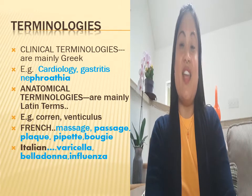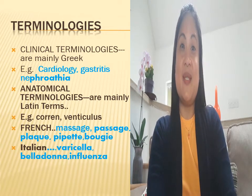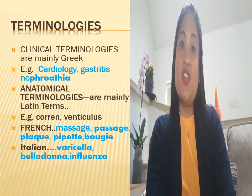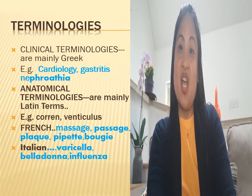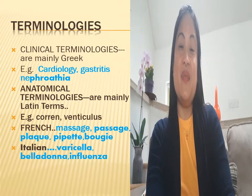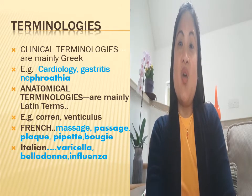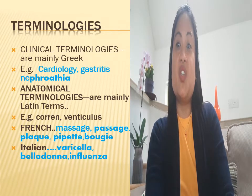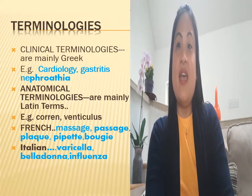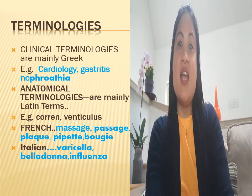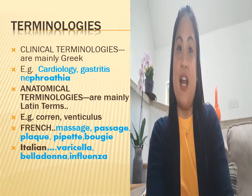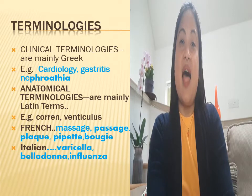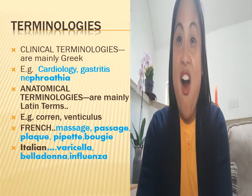Let's trace the origin of the following medical terms. For cardiology, gastritis, and nephroesis, these are mainly Greek. And for the words corin and ventriculus, these are anatomical terminologies which are Latin. And for the words like massage, passage, plaque, pipette, and bougie, these are French. And for the words like varicella, belladonna, and influenza, these are Italian.